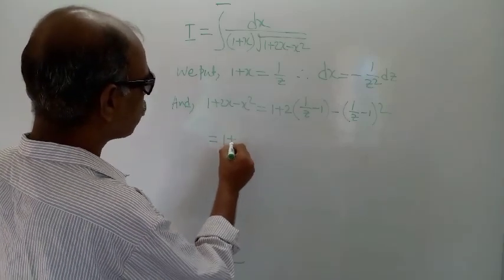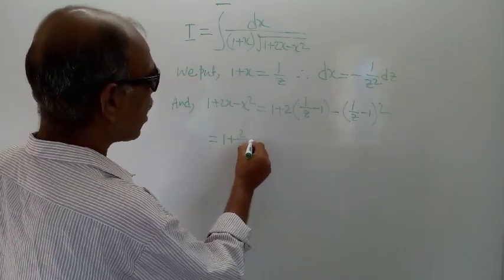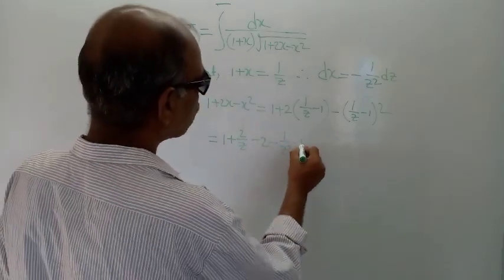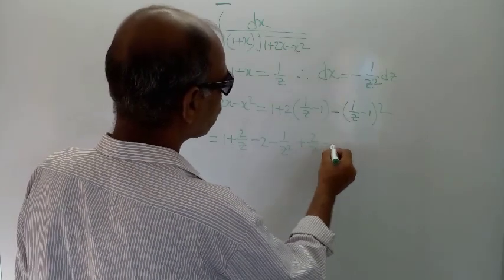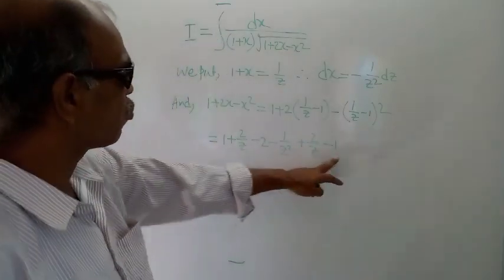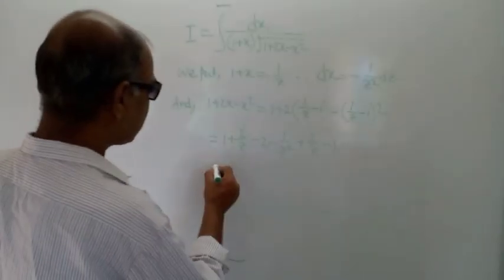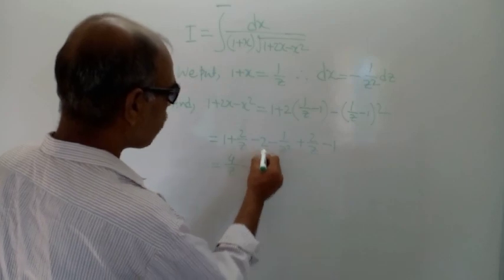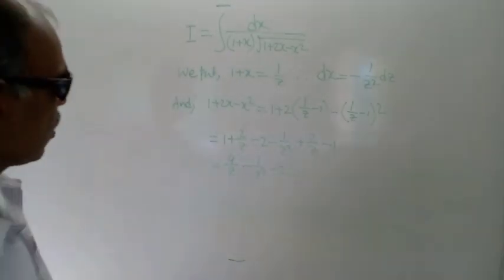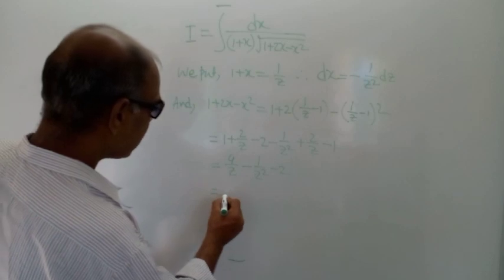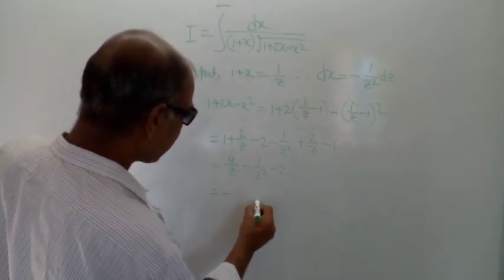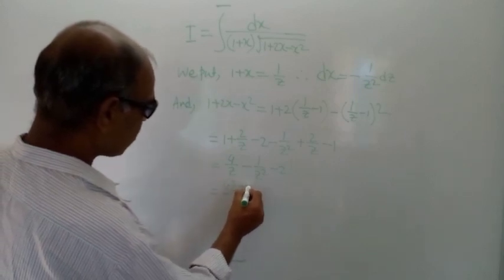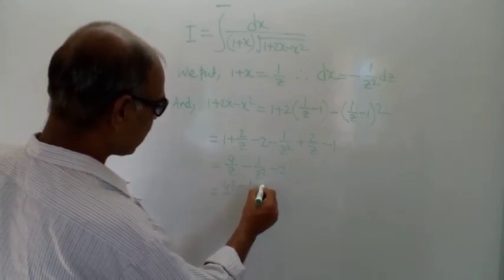Expanding, this is equal to 1 plus 2 by z minus 2 minus 1 by z squared plus 2 by z minus 1. The 1 and minus 1 cancel, and 2 by z plus 2 by z gives 4 by z minus 2. So we get (4z minus 1 minus 2z squared) divided by z squared.